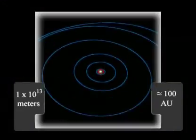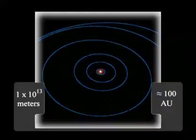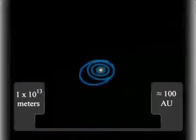Going farther out still to 100 astronomical units from the Sun, or 10 to the 13 meters, we see essentially all the planets in the solar system.